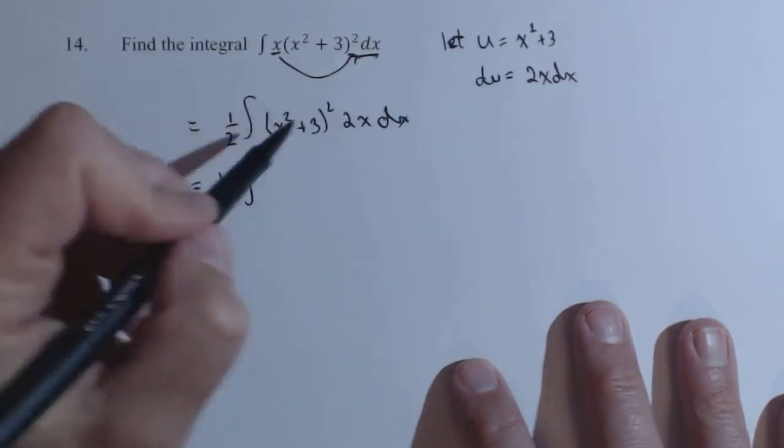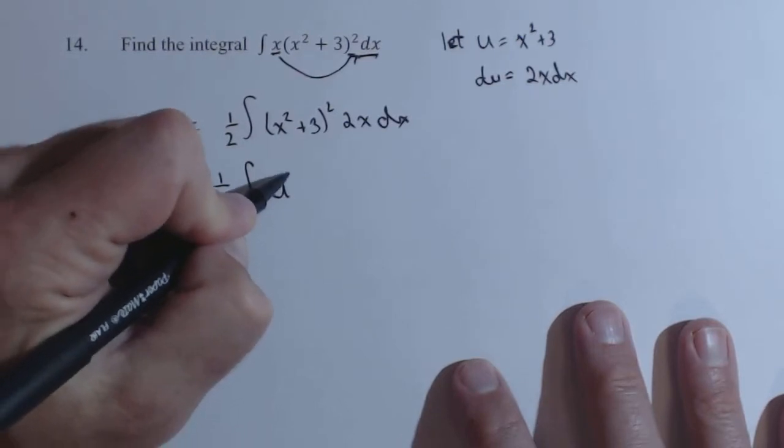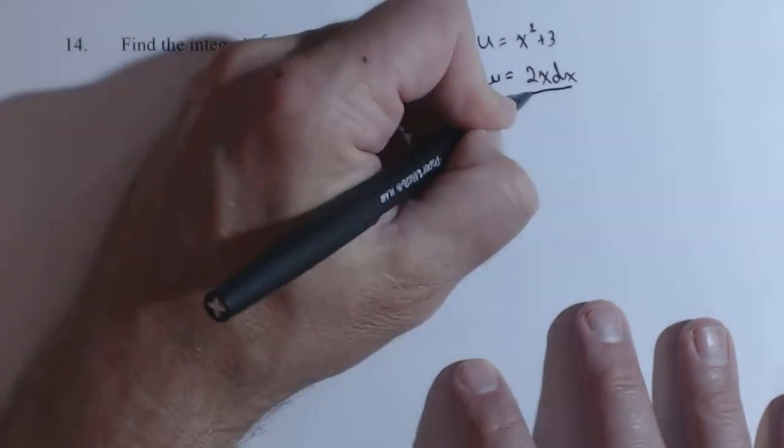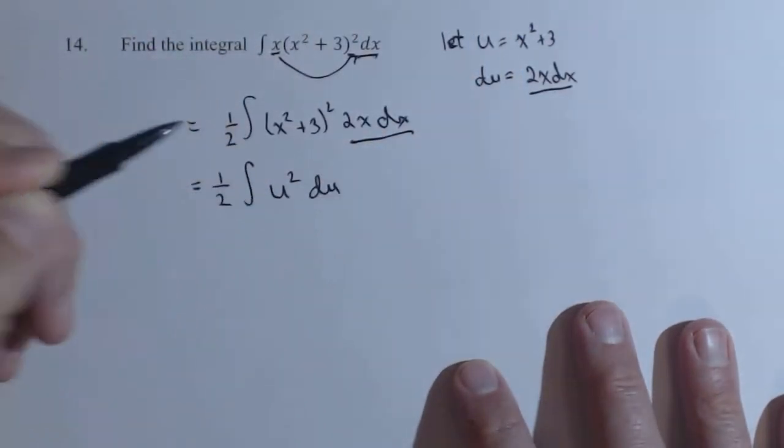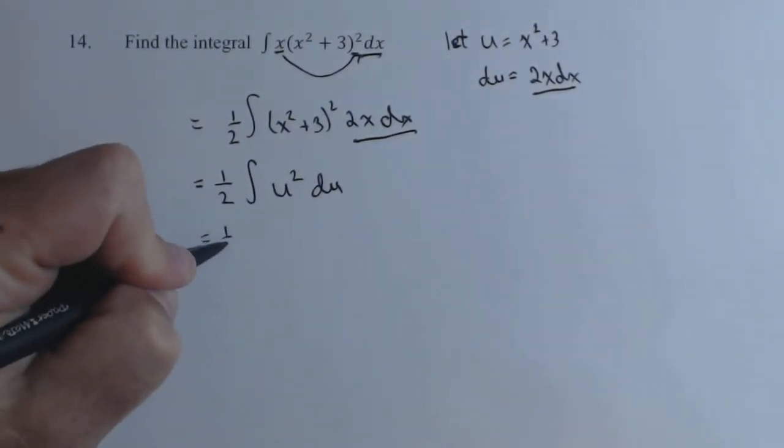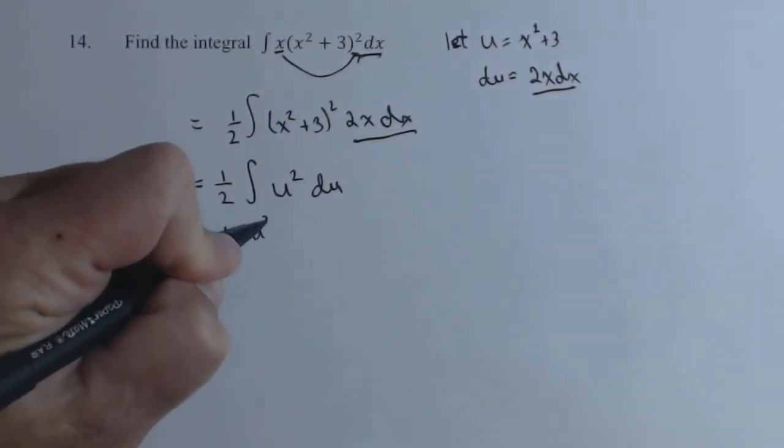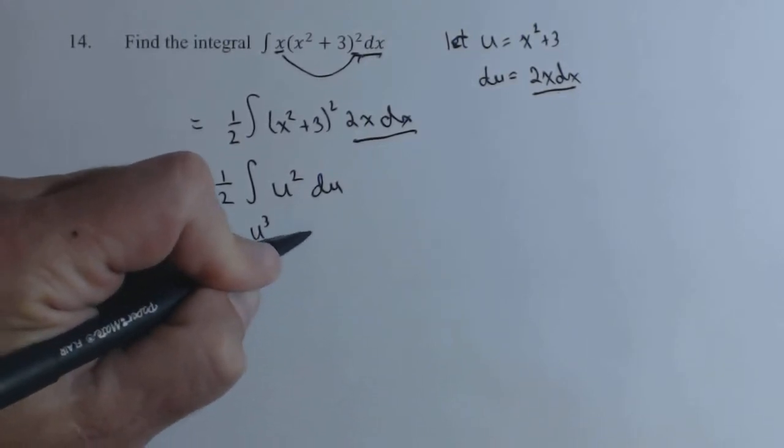Now we have some very straightforward substitutions, and actually this thing just substitutes all the way down to u squared. So I get one-half times u cubed over three plus c.